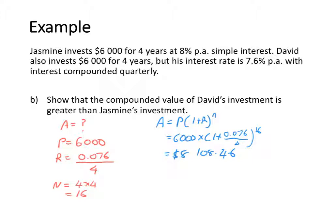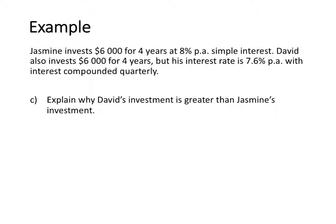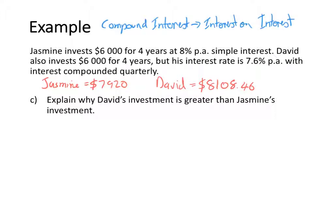Let's compare the two values and look at why they are different. From our calculations, Jasmine has $7,920 after the 4 years and David has $8,108.46. The reason for the difference is that David received compound interest. When you receive compound interest, you are earning interest on interest — every time it compounds, the principal amount resets, so you are earning interest on a growing balance.